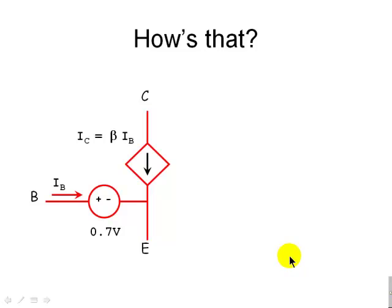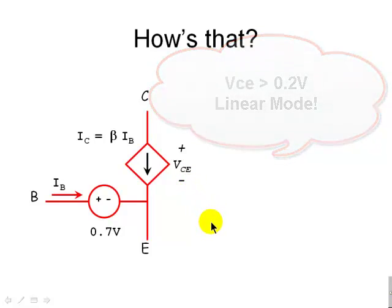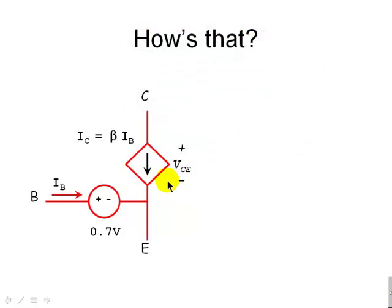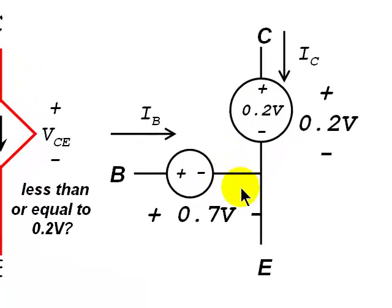To restate: if IB is positive, we compute the voltage VCE — collector to emitter. If that voltage is higher than 0.2 volts, we keep the linear mode circuit, because the transistor is working as an amplifier. However, if VCE is less than or equal to 0.2 volts, we replace the BJT with the saturation equivalent circuit and solve the entire circuit again.